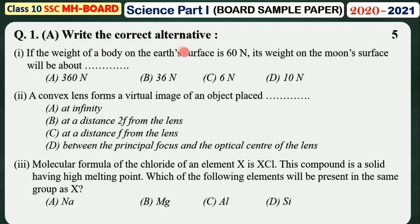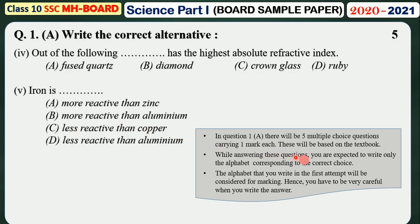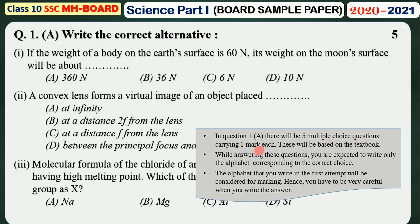In question number 1a, there will be 5 multiple choice questions carrying 1 mark each. These will be based on the textbook, so you have to read the textbook thoroughly. While answering these questions, you are expected to write only the alphabet corresponding to the correct choice. The alphabet that you write in the first attempt will be considered for marking, so be very careful when you write the answer.